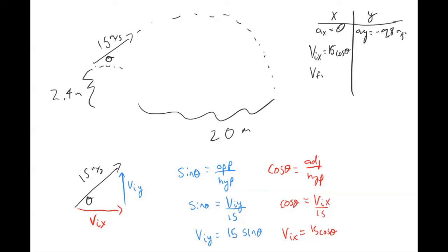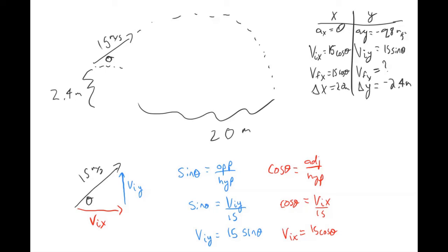The final velocity in the x is also 15 cosine theta, and our delta x is 20 meters. The initial velocity in the y is 15 sine theta. The final velocity in the y we don't know. Delta y is negative 2.4 meters. We don't know how long this projectile will be in the air.